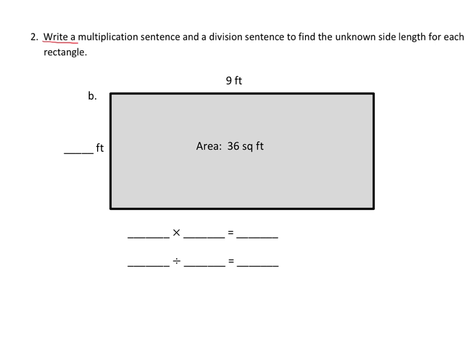Here it says write a multiplication sentence and a division sentence to find the unknown side length for each rectangle. So what we can see is we don't know how many tiles or squares are going up and down, but we do know that there's 9 going across, and we know that the area is 36 square centimeters. So that tells us our multiplication problem is going to have a 9 and a 36 right here.